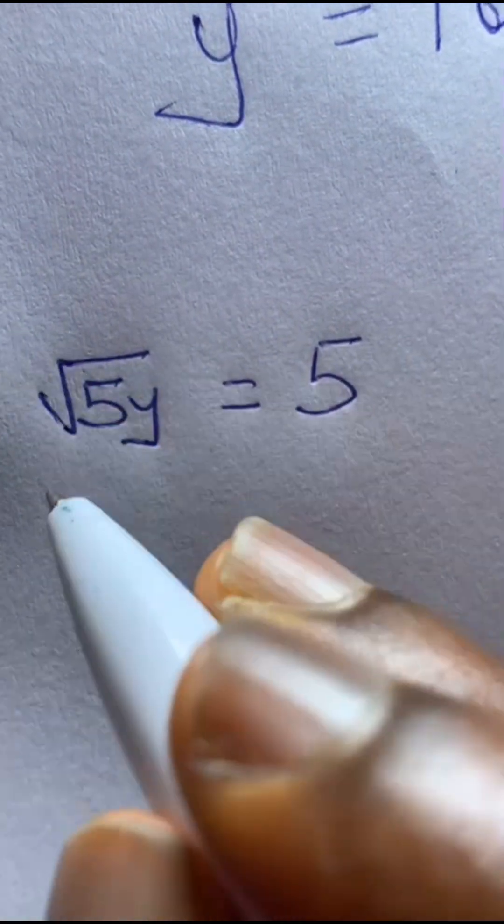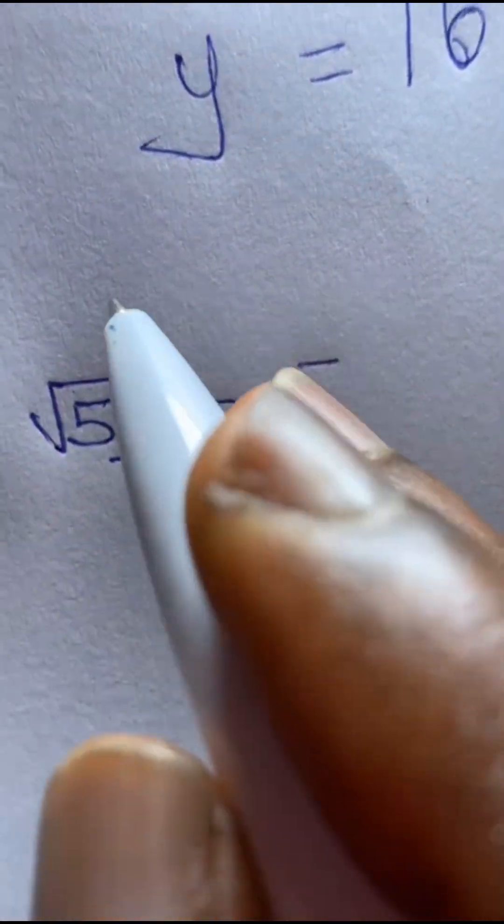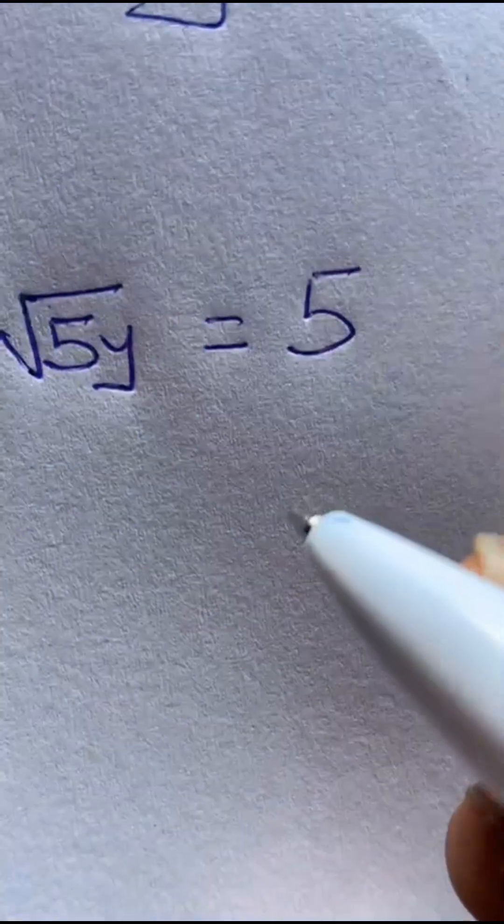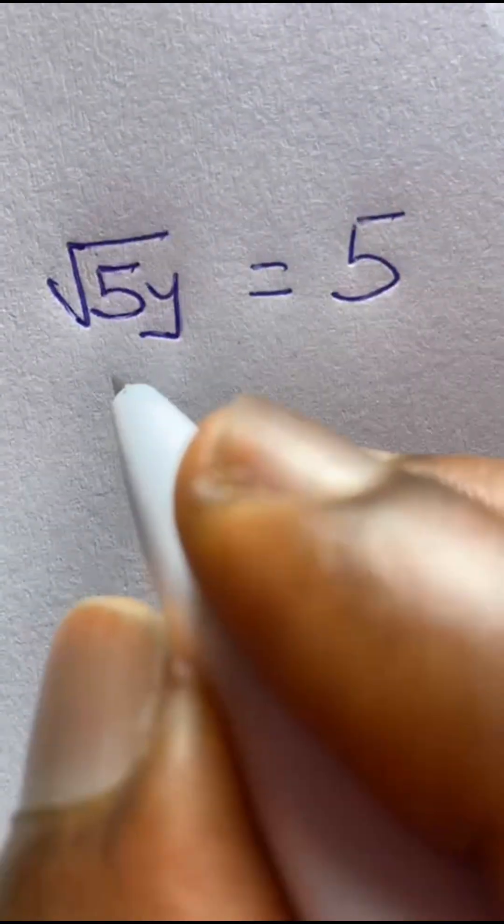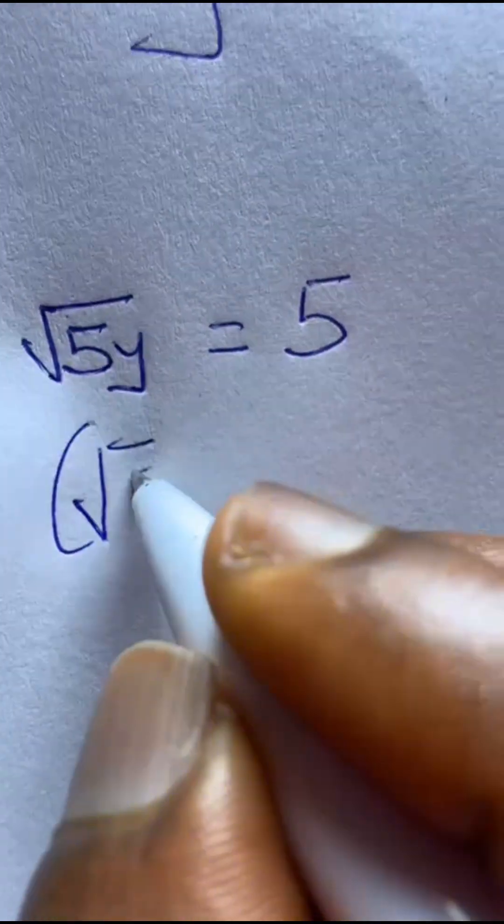What you gotta do is try to eliminate this square root sign. And how do you do it? You need to square on both sides, you feel me? So what we gotta do is you do like this. Follow me? Let me put you through this process.